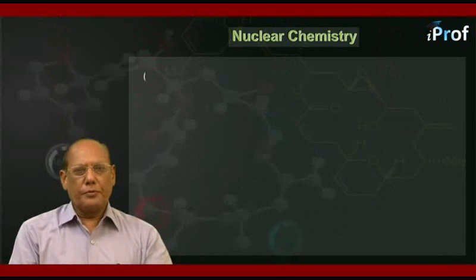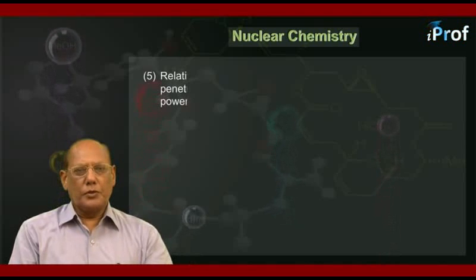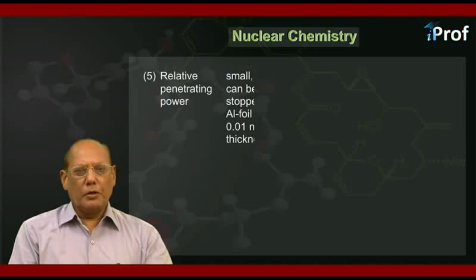Fifth, relative penetrating power. It is small for alpha particles. This can be stopped by aluminum foil of even 0.01 millimeter thickness.